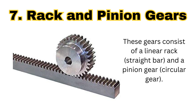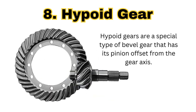The next gear is the rack and pinion gear. This gear consists of a rack, which is a straight bar having straight teeth, and a pinion, which is a circular gear. Rack and pinion gears are generally used in the steering system, where rotational motion is converted into linear motion so that we can easily navigate the car.